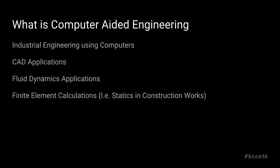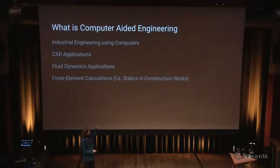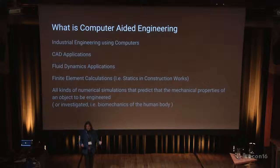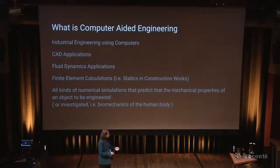So what is it? There are computer-aided design applications, which are part of engineering — this is more or less the first step when you want to create an object in the real world. Then there are fluid dynamics applications, and there are also finite element calculations — for example, if I want to know whether an object will survive an impact, or whether a building will stay in place. In the end, it's all numerical simulations: solving partial differential equations that predict the mechanical properties of objects to be engineered.